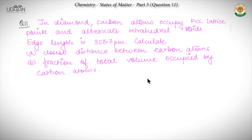Question number 11 is based on the diamond lattice — every year a lot of questions are asked on this topic. In diamond, carbon atoms occupy FCC lattice points and alternate tetrahedral voids. The edge length is given to be 356.7 picometers. We need to calculate the closest distance between carbon atoms, and in part B, the fraction of total volume occupied by the carbon atoms.